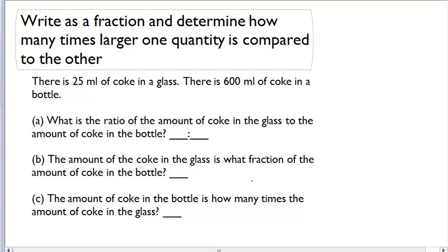So we're given the situation. We have coke in a glass, coke in a bottle, and now we want to calculate some ratios. The first one says, A, what is the ratio of the amount of coke in the glass to the amount of coke in the bottle?